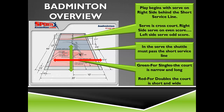If the score is an even number, you serve on the right; if it's an odd number, you serve on the left. To be a legal serve, the shuttle must pass the short line on the opposite side of the court and land to the right or left of the midline. For singles, the court is narrow and long using the inside sidelines and the far back baseline. For doubles, you use the short baseline but the wide sidelines.